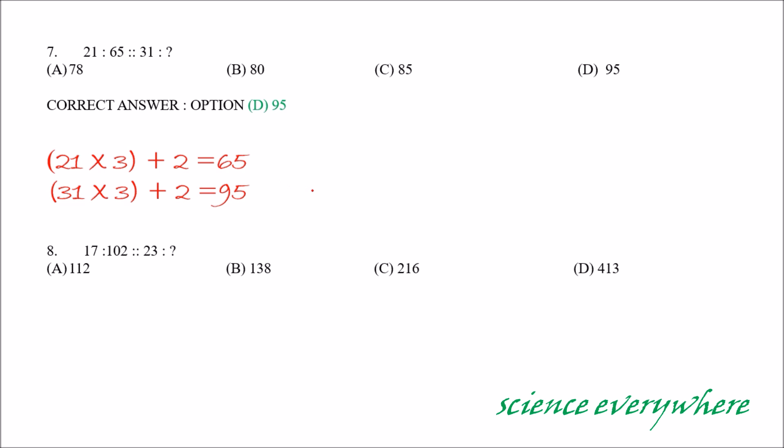Next question is similar to the above. Find the relationship between 17 and 102 and establish this with 23 and find the correct answer. So, correct answer is option B, 138. Let us see how we have got it. Reason: 17 into 6 is 102. So, let us multiply 23 with 6 and see what we get. 23 into 6 is 138. There is 138 in the option. So, our correct answer is B, 138.